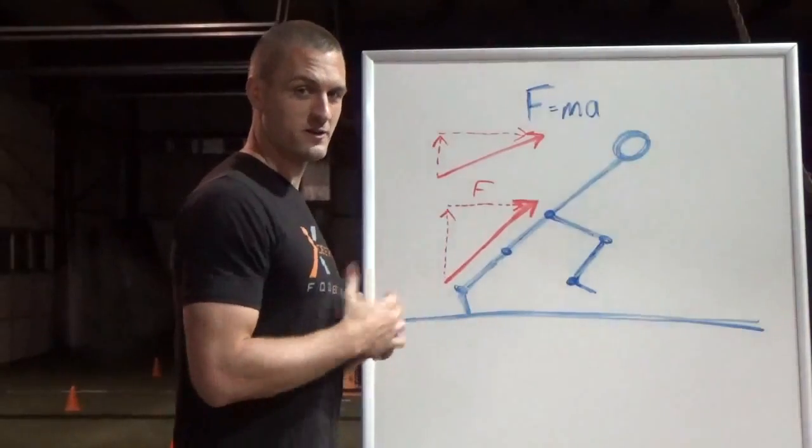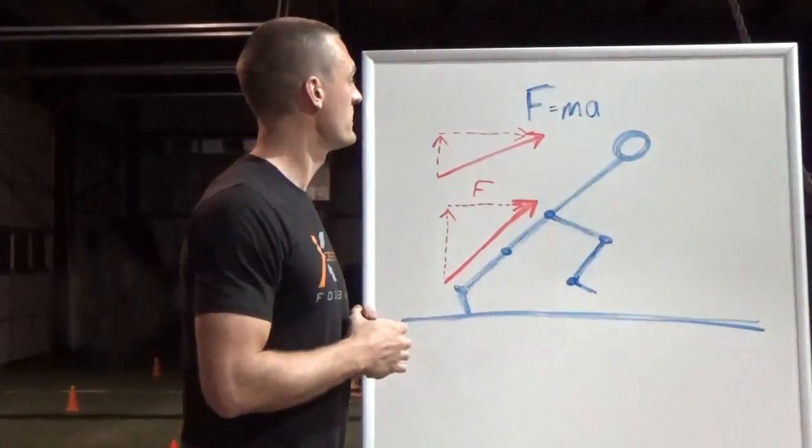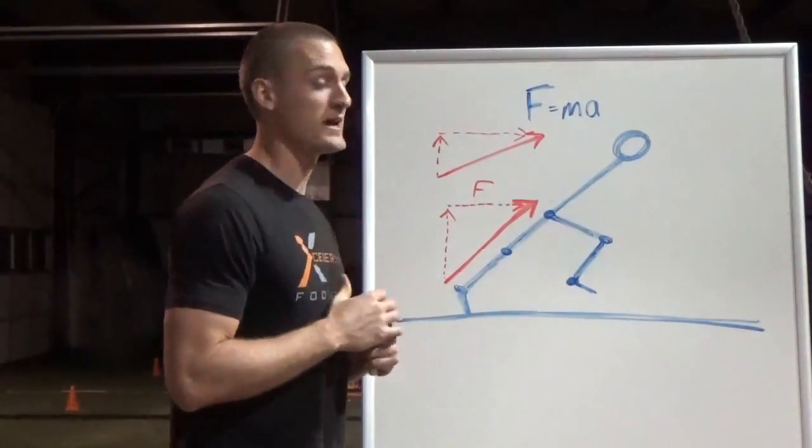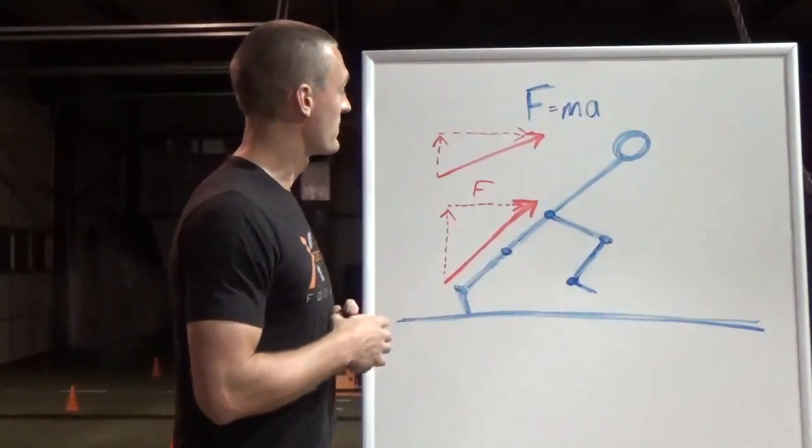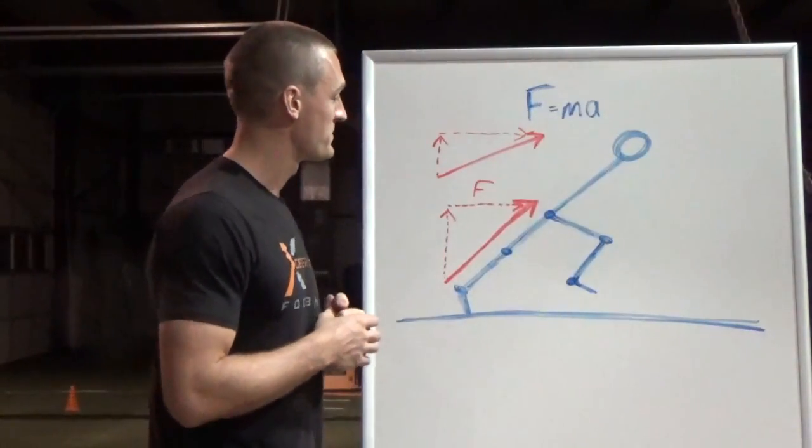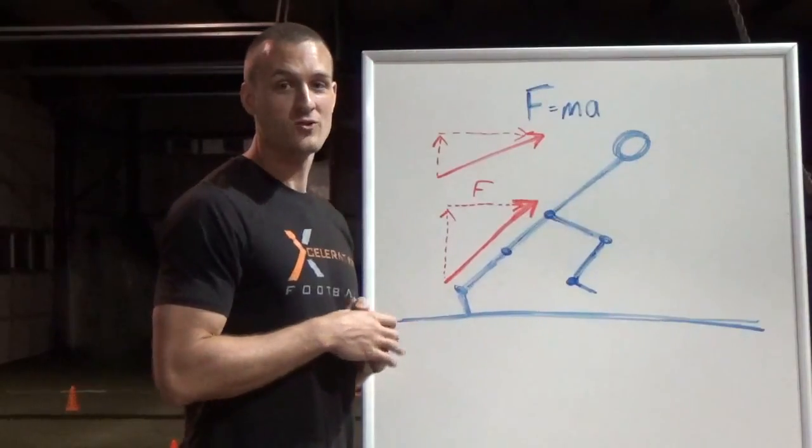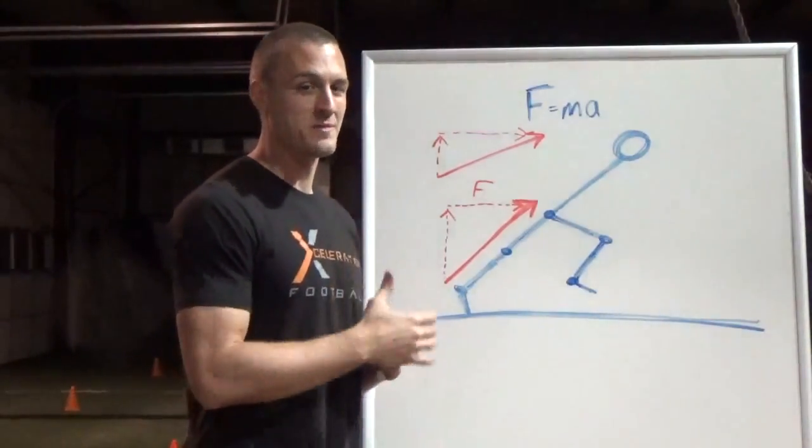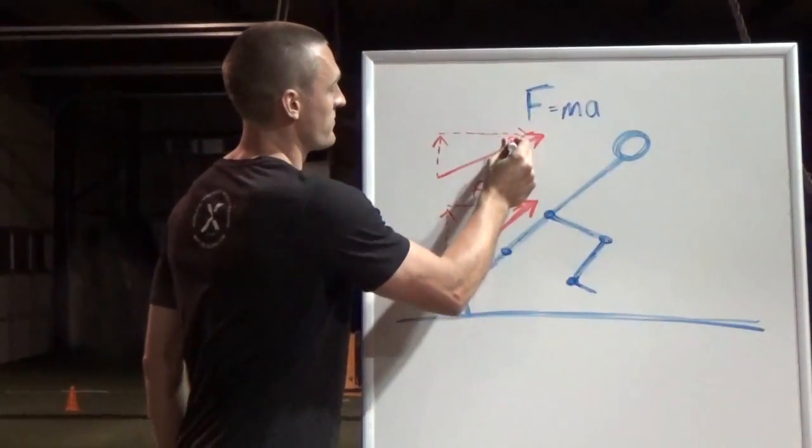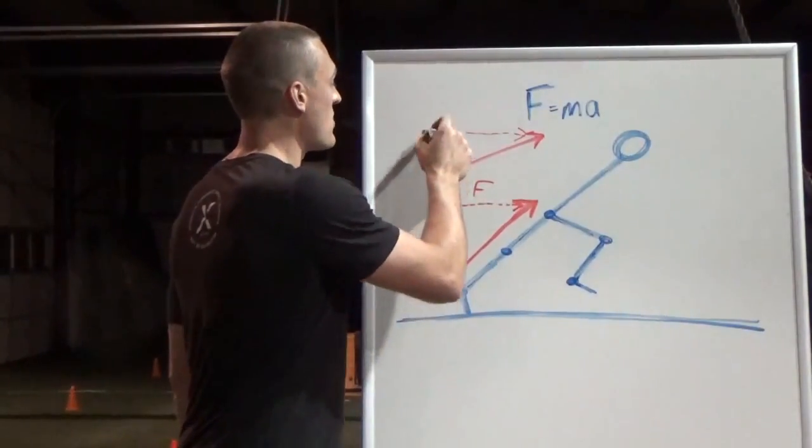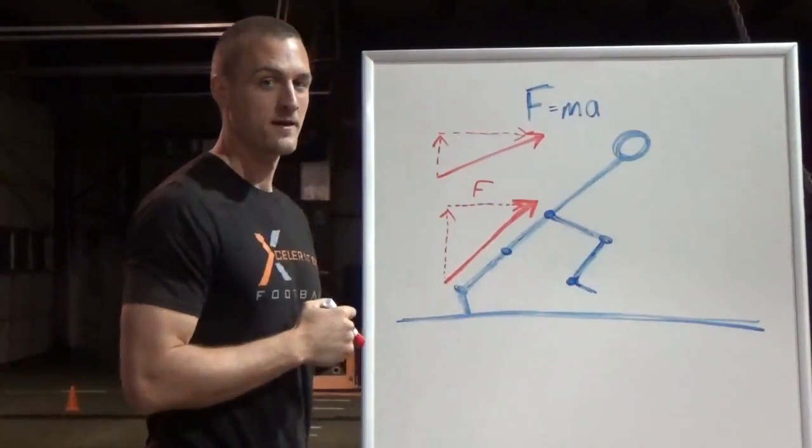So when you're training your acceleration, one of the things you want to do is try to accelerate at a lower angle to get more horizontal force. However, we have to keep in mind something. That would be gravity, our unrelenting enemy. So you notice we got a larger horizontal force component here, but we got a smaller vertical component.